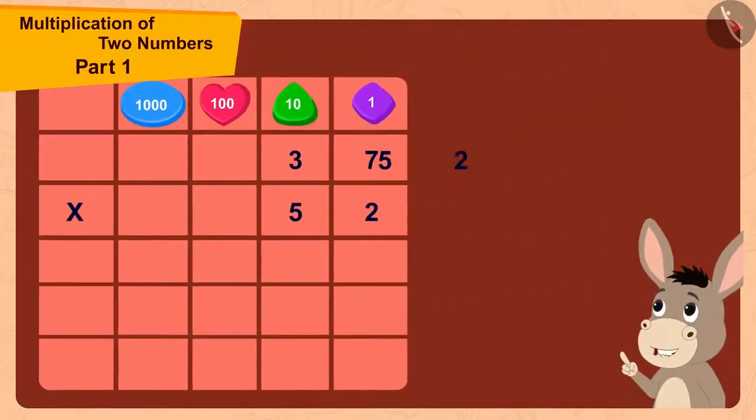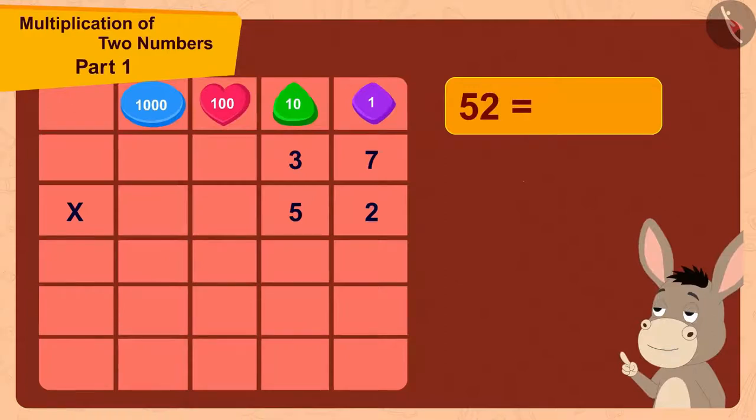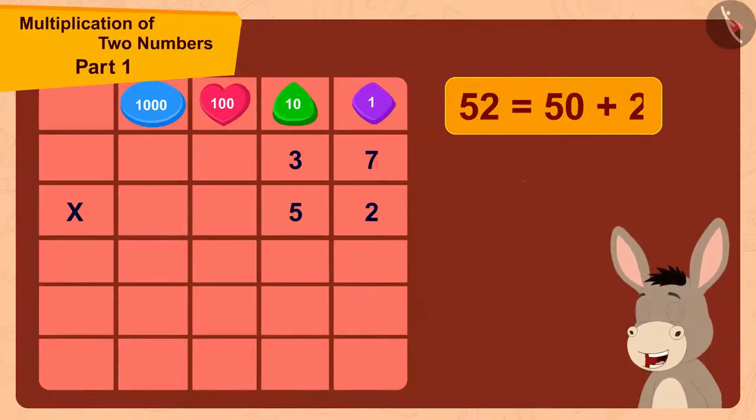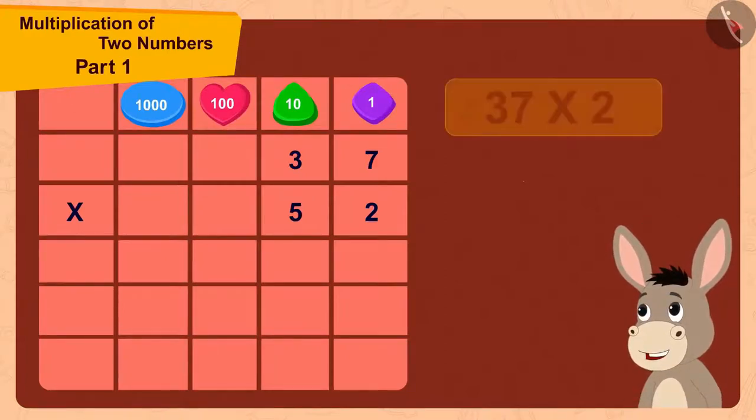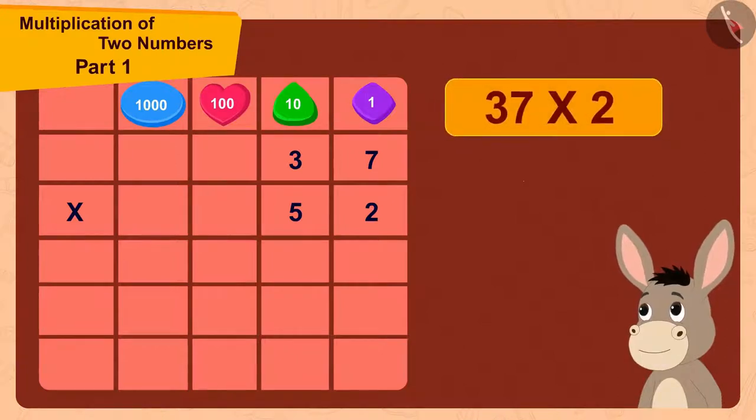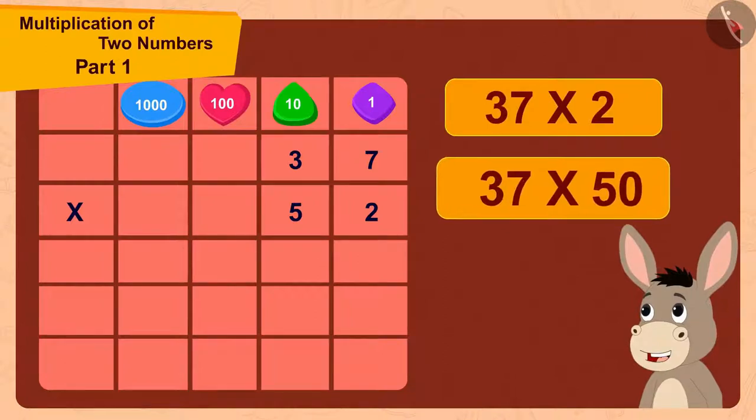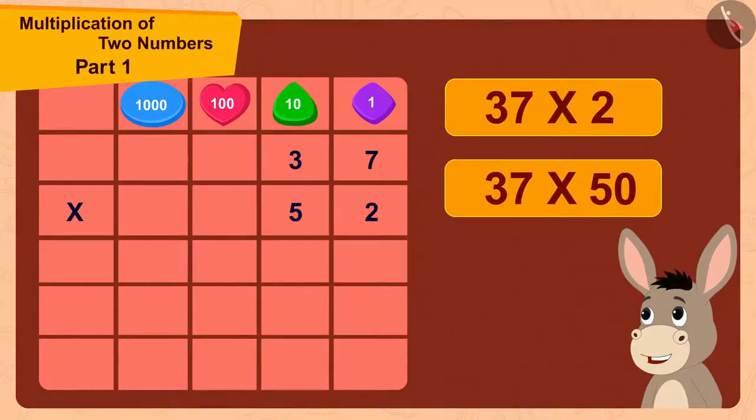52 is made by adding 2 to 50. So, first I will multiply 37 by 2 and then multiply it by 50, thought Bhola.